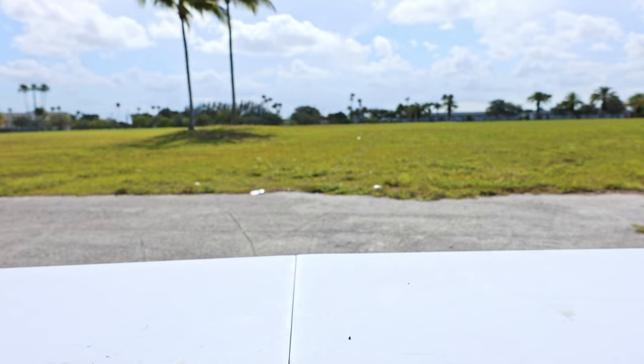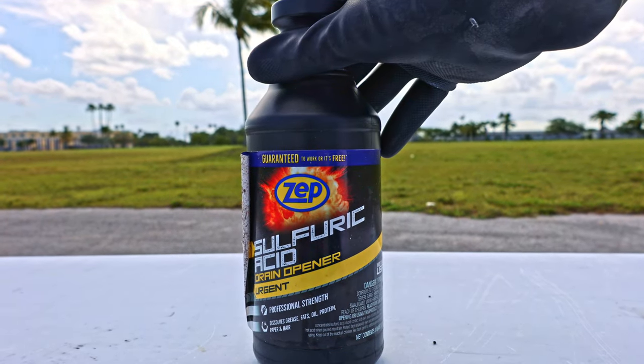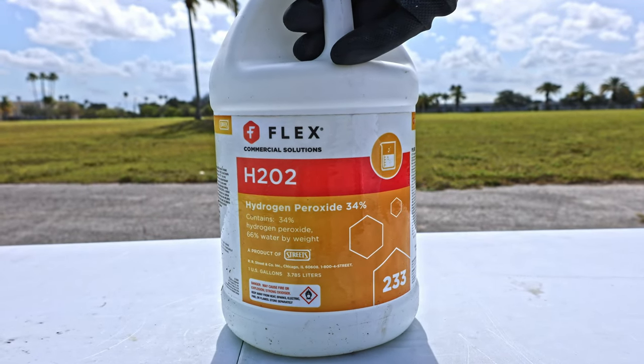Today I'm going to show you how to make white fuming nitric acid. The materials you need are sodium nitrate, sulfuric acid, and 34% hydrogen peroxide.